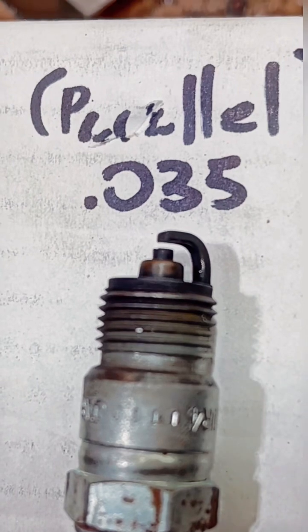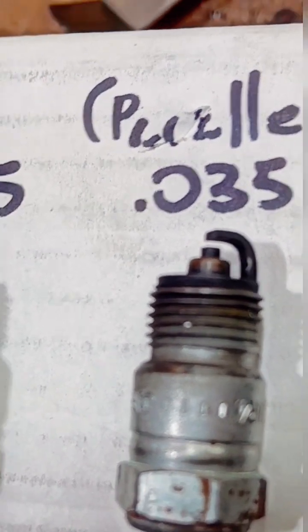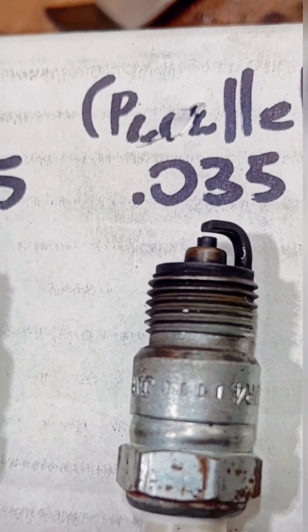Next up we have 35 thousandths. Side electrode parallel to the top of that center electrode. That's going to be the most common when you got points, electronic ignition or anything else.